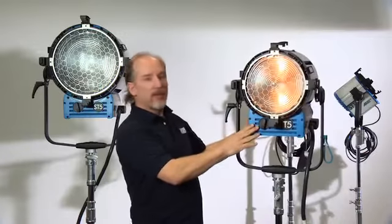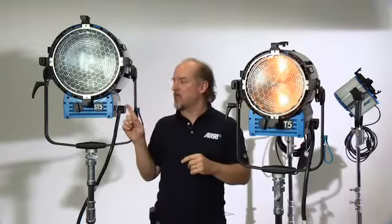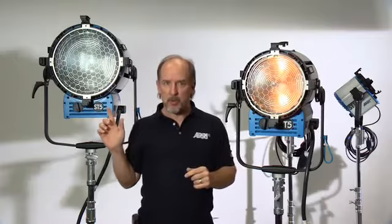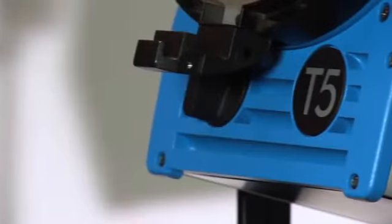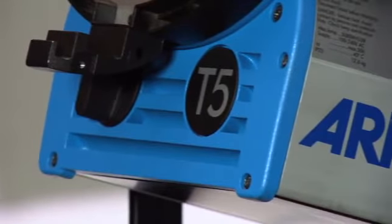So this is the T5 5000 watt Fresnel. This is the ST5, which is what they call their studio version of the same instrument. This has a slightly larger lens. This is a 12-inch Fresnel lens. This is a 10-inch Fresnel lens. This is the T5 from the new ARRI True Blue line.